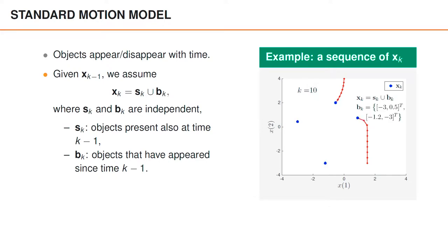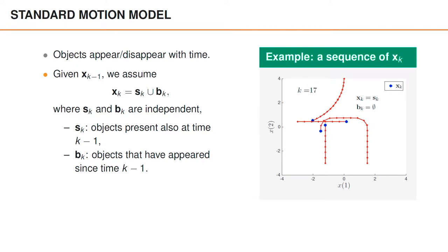At time 10, two new objects appear, and sk and bk contain two state vectors each, whereas xk contains all four vectors. After that, no more objects appear in the rest of the sequence, which means that sk and xk are the same.